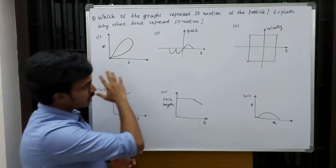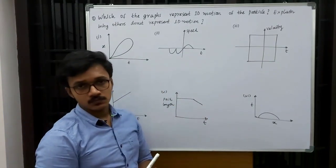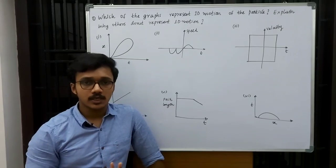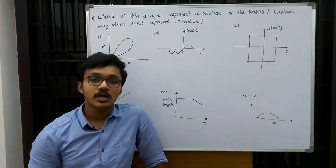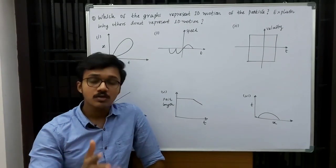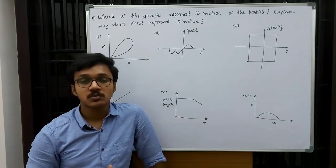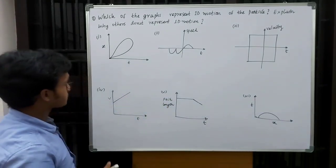So we are given with six graphs. We have to check which of the following graphs represent one dimension motion, and if they do not represent one dimension motion, we have to explain why. So let us see one by one.